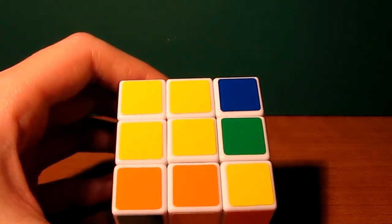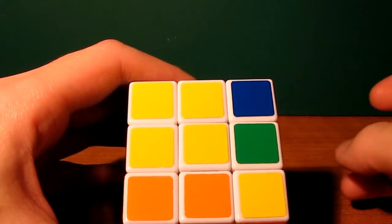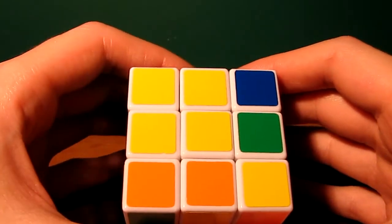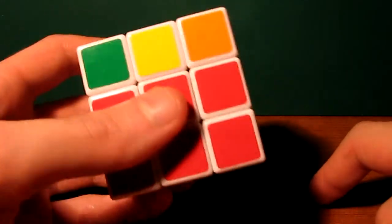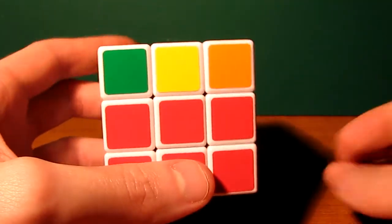And you're only ever going to get one of those four cases. If you get an odd number of edges correctly oriented, like one or three, then either your cube is messed up or you screwed something up in the first two layers.